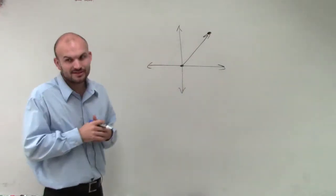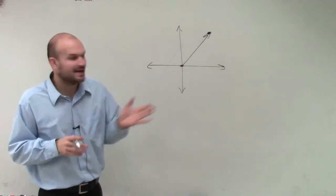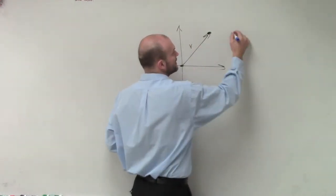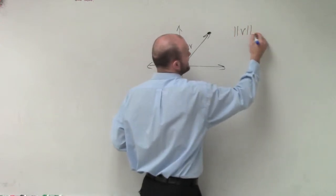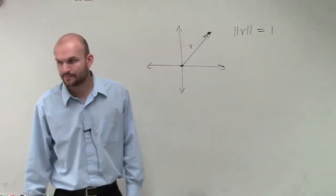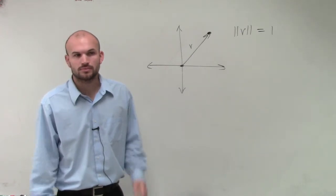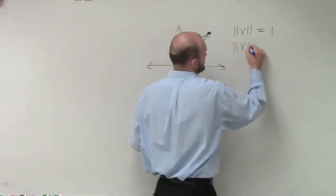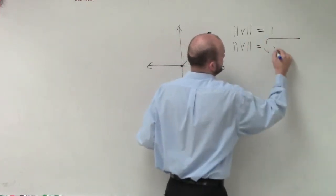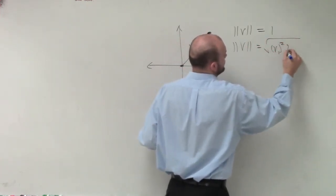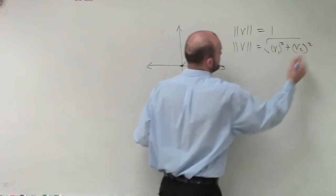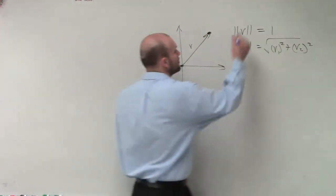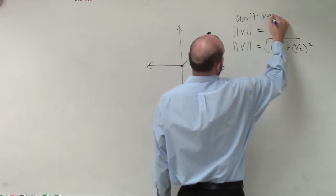So with vectors, if I have a magnitude of my vector v, let's say this is v. If the magnitude of v is equal to 1, right? So we learned how to find the magnitude. Magnitude of vector equals the square root of v1 squared plus v2 squared. If that is equal to 1, this is what we call a unit vector.